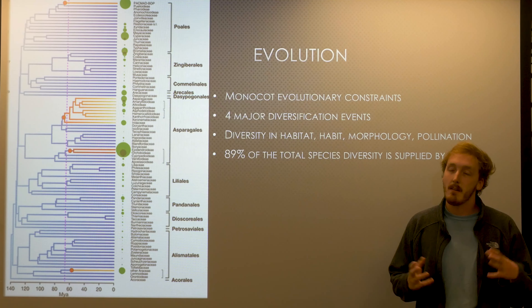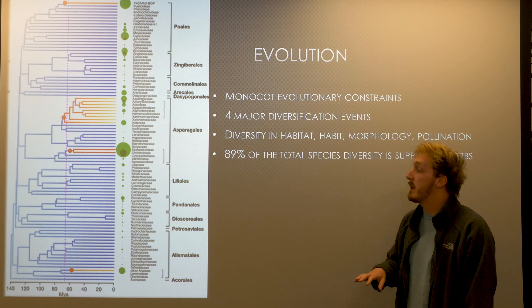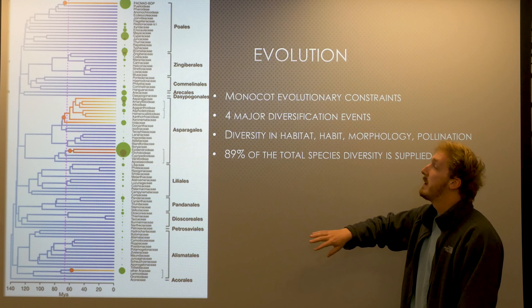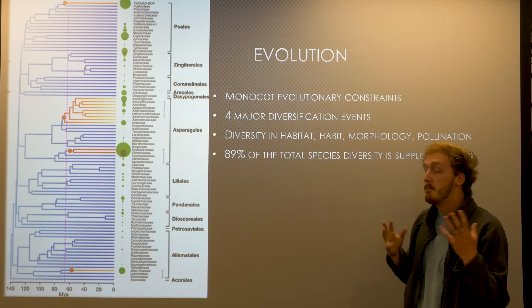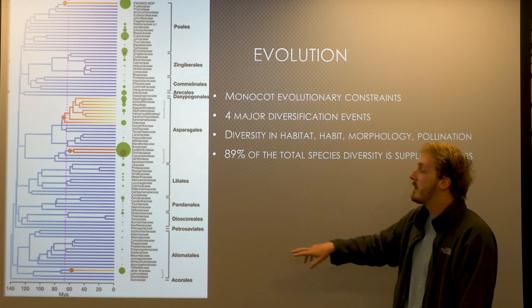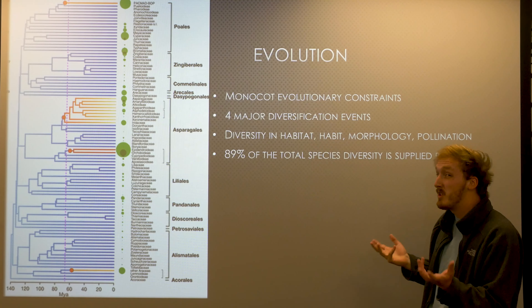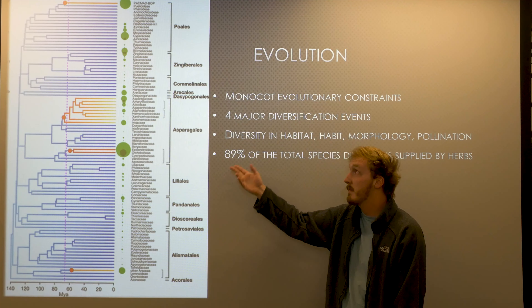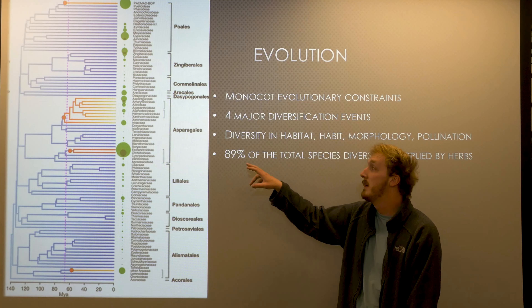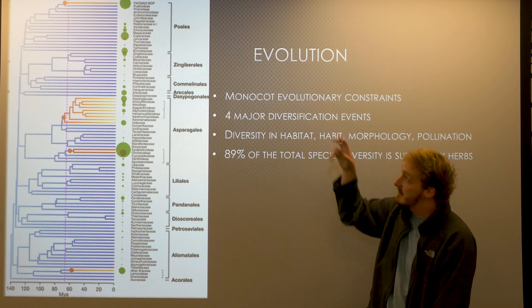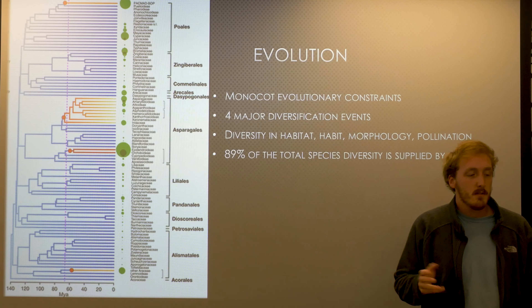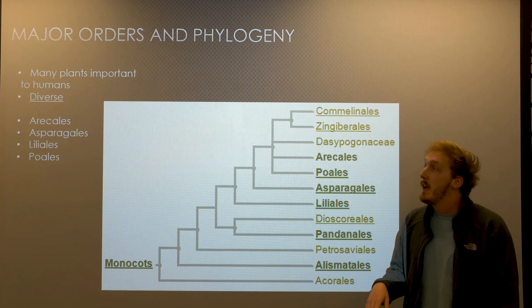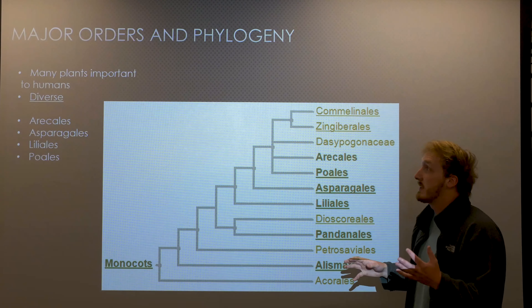The origin of the monocots: since monocots don't have true wood, it's been hard to have a really good fossil record of them. But our molecular clocks date them to about 140 million years ago, our oldest pollen grains are about 125 million years ago, and we actually do have a couple of fossils. This one is Sinoerba vicgenensis, a relative of modern-day arums, and those pollen grain fossils were also from relatives of modern-day arums, dated to about 125 million years ago.